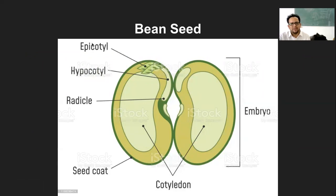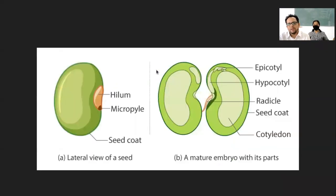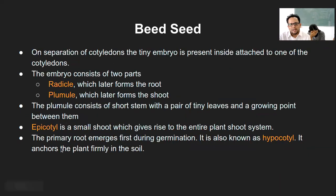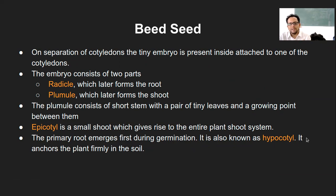Epi means top, and cotyl refers to cotyledon. So the top part of the cotyledon which is growing into the plumule or into the leaf — that is what is epicotyl. And the primary root will emerge during germination from the hypocotyl. Hypo means below, and that is what is the lower part of the cotyledon which is growing into the root system.